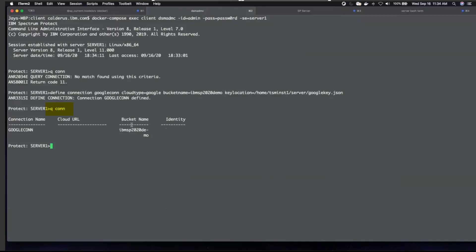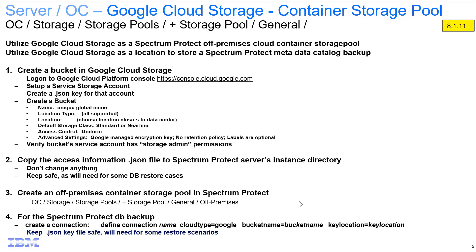Do check out the other video I have on using the Google Cloud buckets for Spectrum Protect database backups. In summary, I've showed you how to set up a Spectrum Protect container that is cloud-based for the off-premise Google Cloud. I also showed you how you can set up a connection for the Spectrum Protect database backups to also be sent to the cloud. Thank you very much.